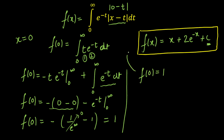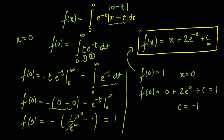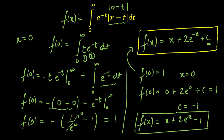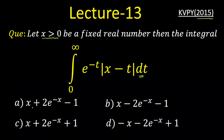Now plugging x = 0 into our expression f(x) = x + 2·e^(-x) + c, we get f(0) = 0 + 2·e^0 + c = 2 + c. Setting this equal to 1, we get c = 1 minus 2 = minus 1. Therefore f(x) = x + 2·e^(-x) minus 1. This matches the first option. For those who got the right answer, congratulations — you have cracked this problem. That will be our final answer and that will be all.